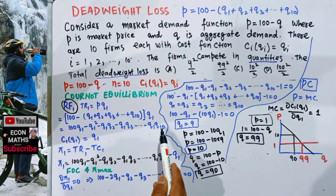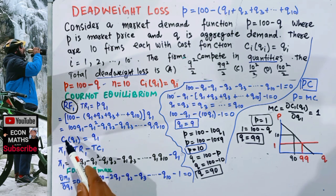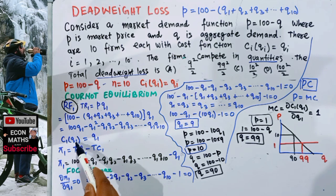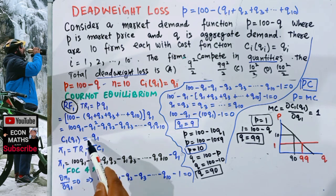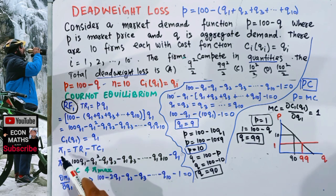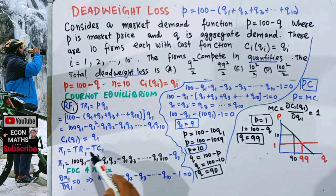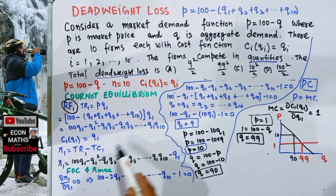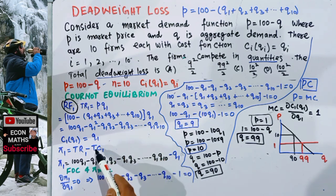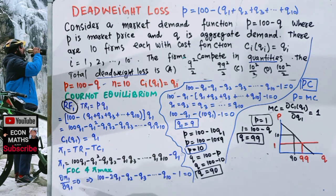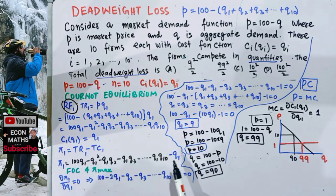Similarly, the total cost function of firm 1 is TC1 = Q1. So the profit of firm 1 is total revenue minus total cost: π1 = (100 - Q1 - Q2 - ... - Q10) × Q1 - Q1. The first-order condition for profit maximization requires that the partial derivative of profit with respect to Q1 equals zero.